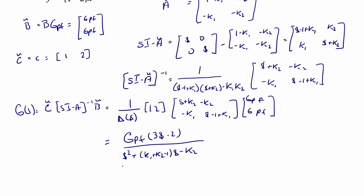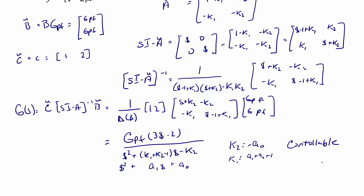So once again, we answer the question: is it possible to select gains to set the characteristic equation equal to an arbitrary polynomial, placing the poles anywhere we would like? We set it equal to s-squared plus a1·s plus a-naught and solve for K1 and K2. We get K2 equals negative a-naught, and K1 equals a1 plus a-naught plus 1. So it is possible, and we deduce that this is a controllable system.